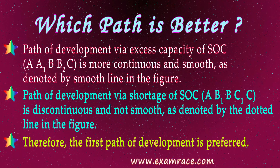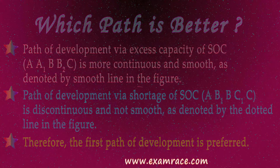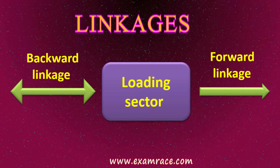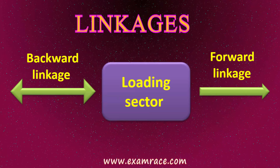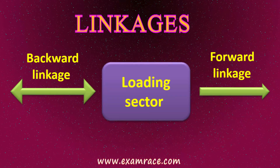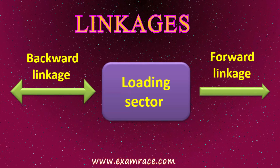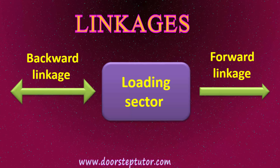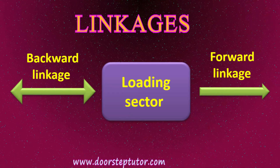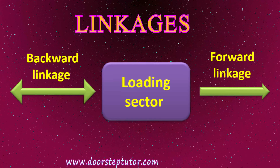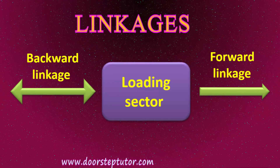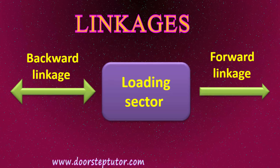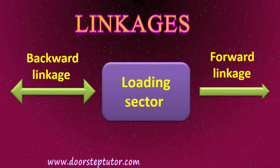The preferred path of development is via excess capacity in SOC — that is, A→A1→B→B2→C. According to Hirschman, creating imbalances is necessary for economic growth. However, the question arises: how do we identify the activities with which to create imbalances? To identify such activities, we look at linkages, which are of two types: forward linkage effect and backward linkage effect.